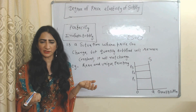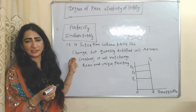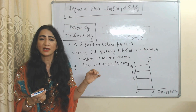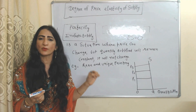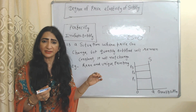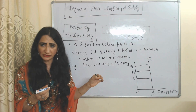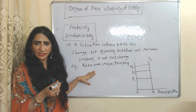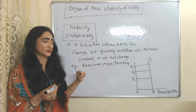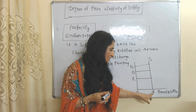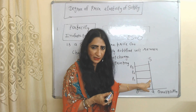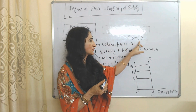Now we will see the degrees of price elasticity of supply. The first is perfectly inelastic supply, which means prices can change but quantity supplied will remain constant — it will not change. For example, a rare and unique painting: if demand increases, prices will increase but supply remains constant. In the diagram, supply is constant at OQ but prices are increasing, and the vertical line represents the supply curve. In this case, elasticity of supply is equal to zero.